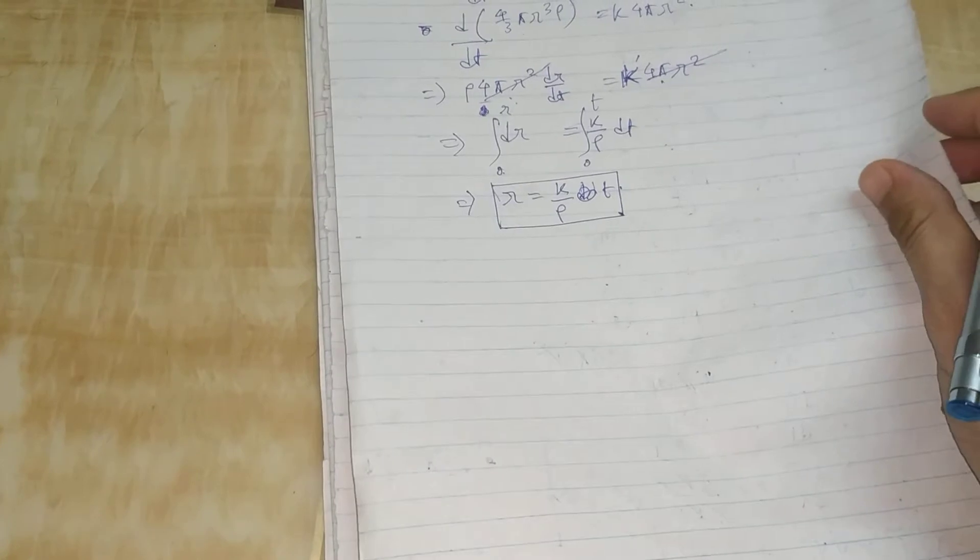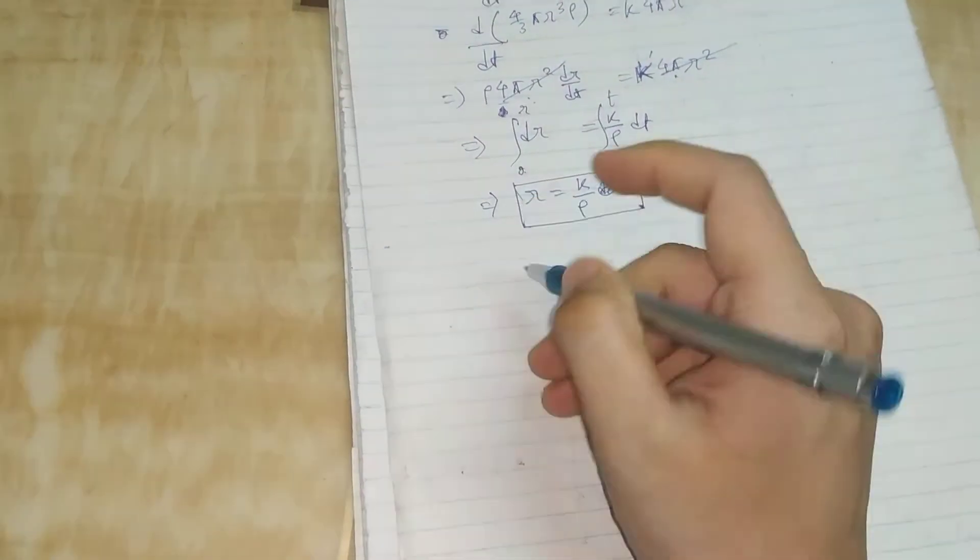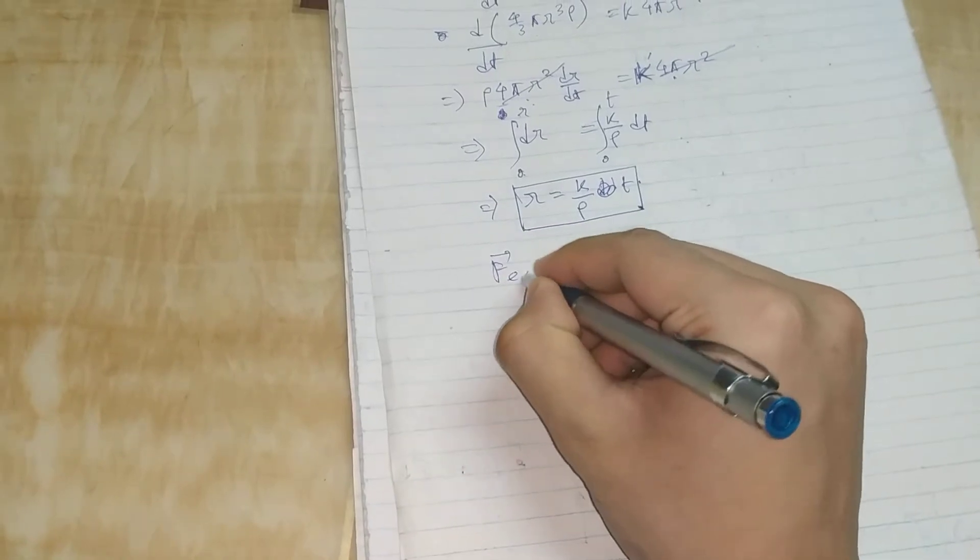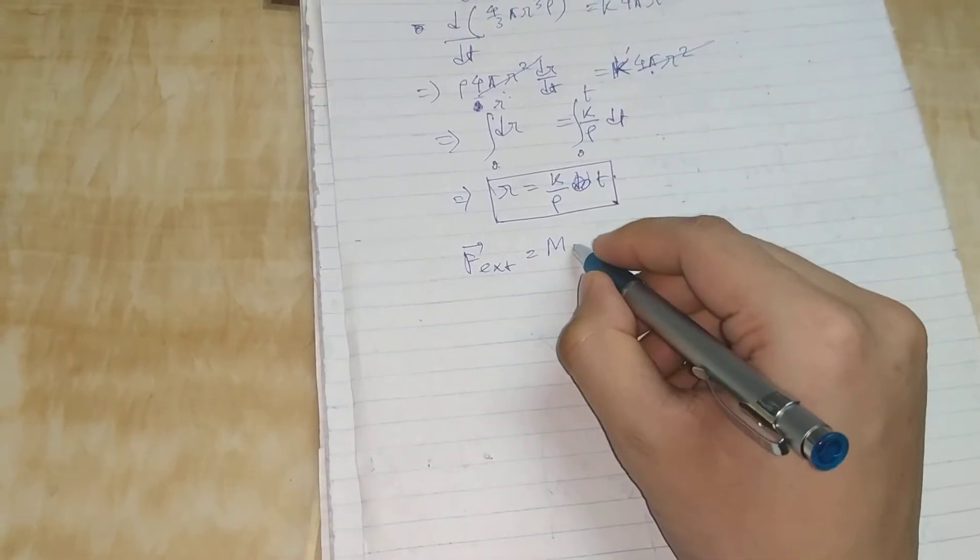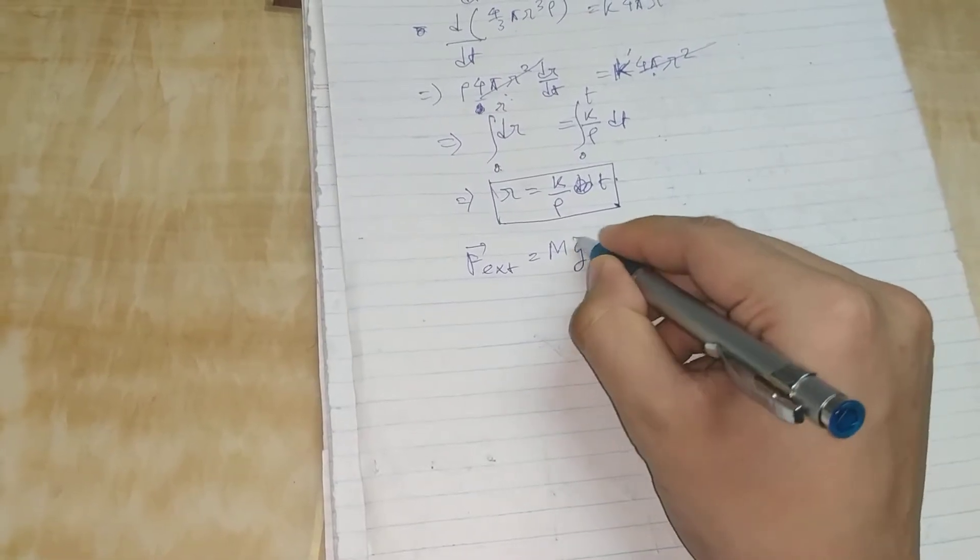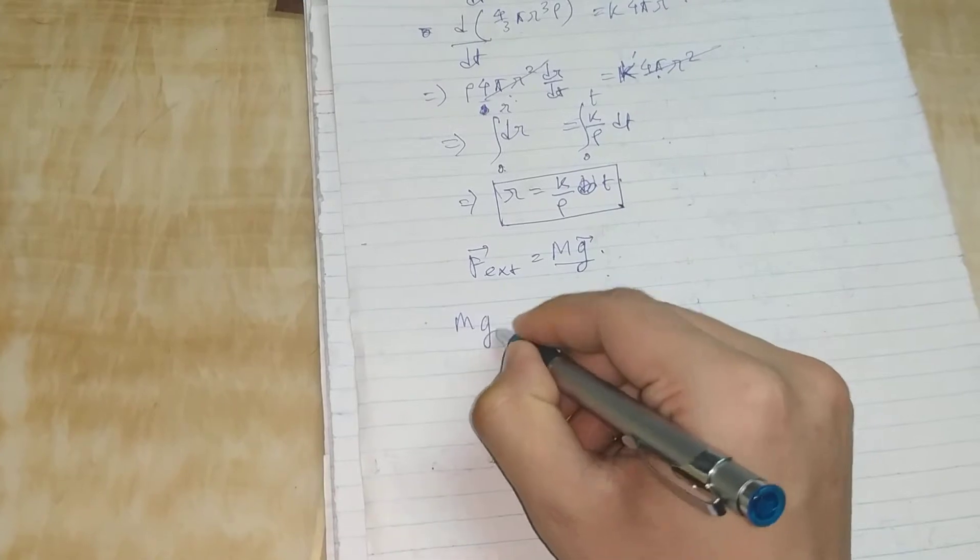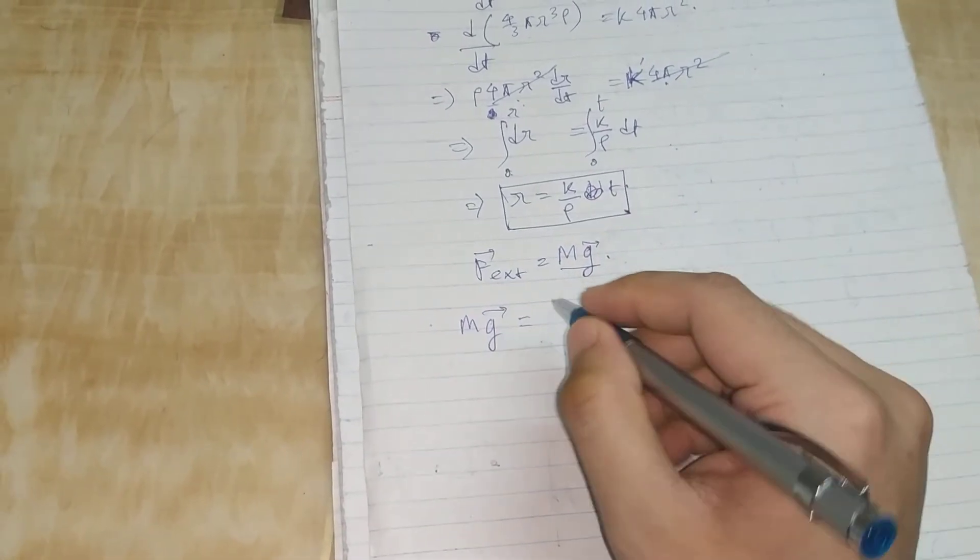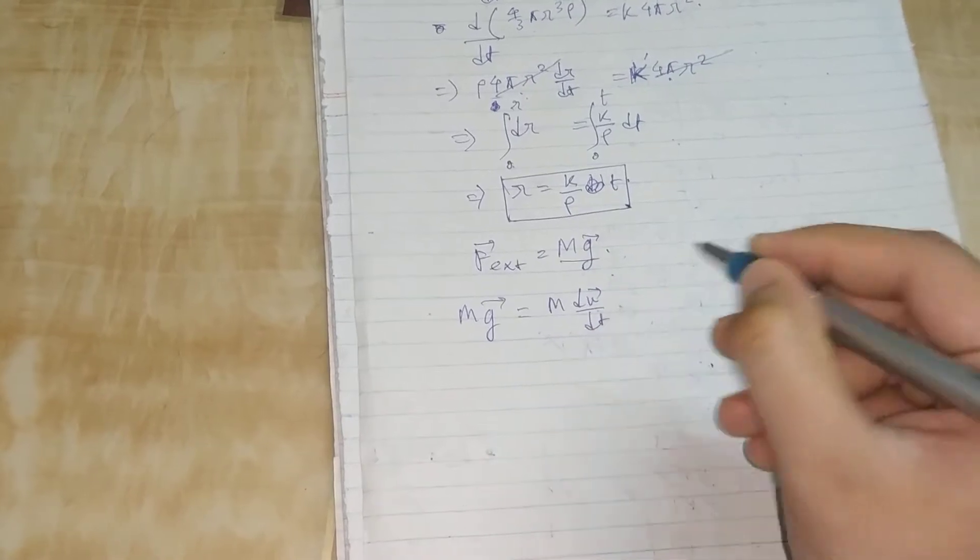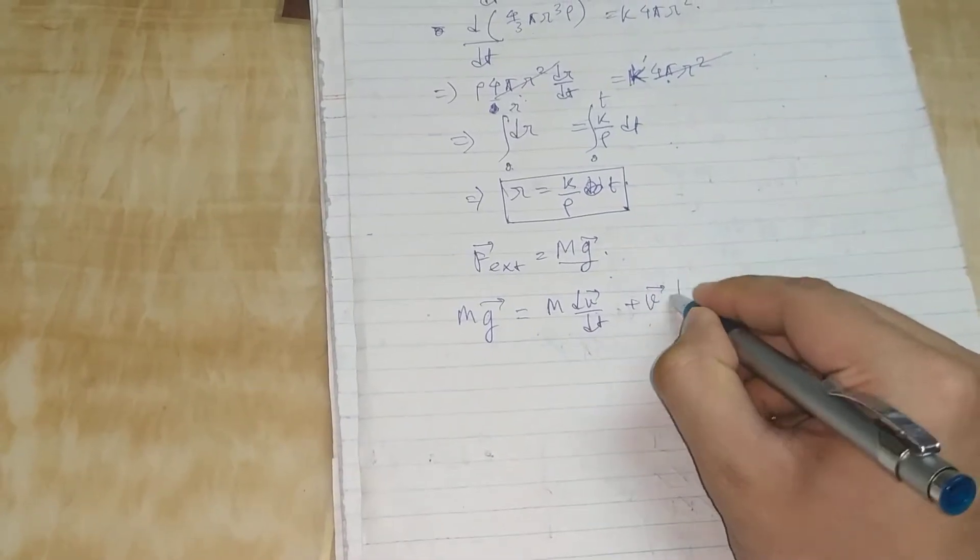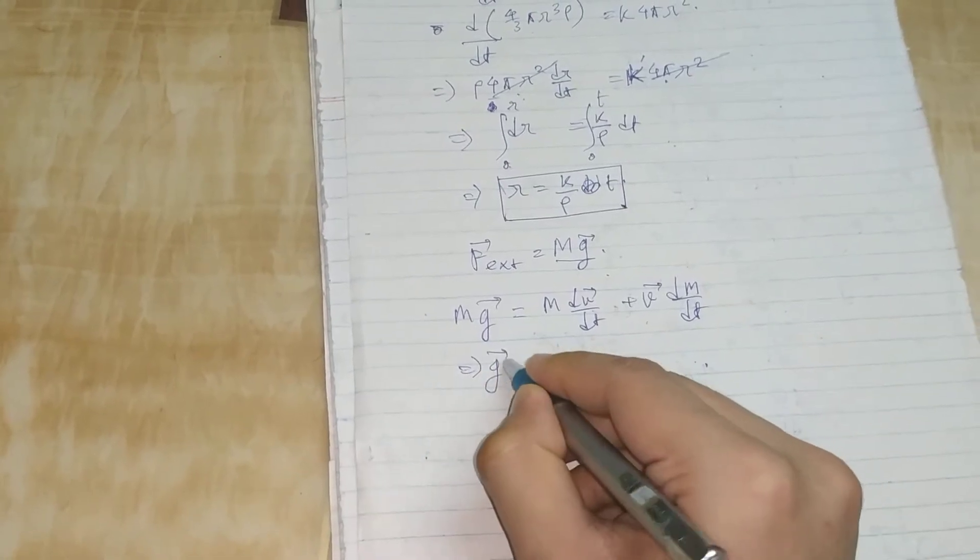Now in this case, the external force is nothing but the mass of the raindrop multiplied by the acceleration due to gravity. So we can write this equation as mg = d(mv)/dt.